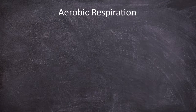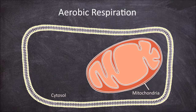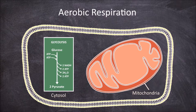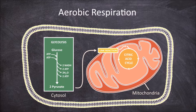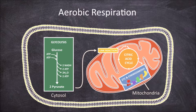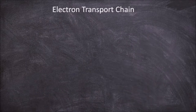Aerobic respiration occurs within cells. It starts with glycolysis in the cytosol of the cell, then goes through the link reaction moving into the matrix of the mitochondria, followed by the citric acid cycle within the mitochondria matrix. It then goes through the electron transport chain and chemiosmosis in the inner mitochondrial membrane, producing energy in the form of ATP. In this video we're going to look at the fourth process involved in aerobic respiration: the electron transport chain.